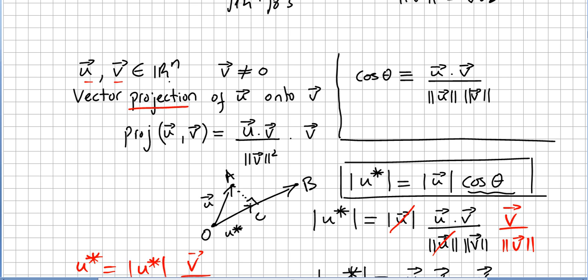We pick vectors u and v in the vector space R^n where v is not zero. The vector projection of u onto v is (u·v)/(||v||²) times v. We saw in the previous video that this concept is the same as the usual vector projection used in physics.